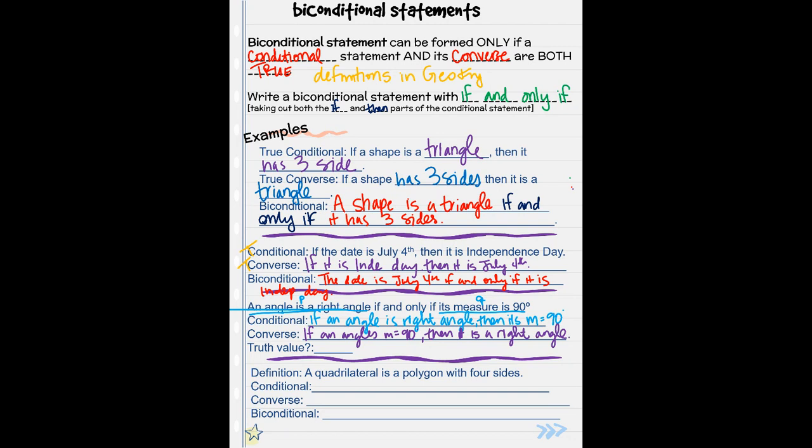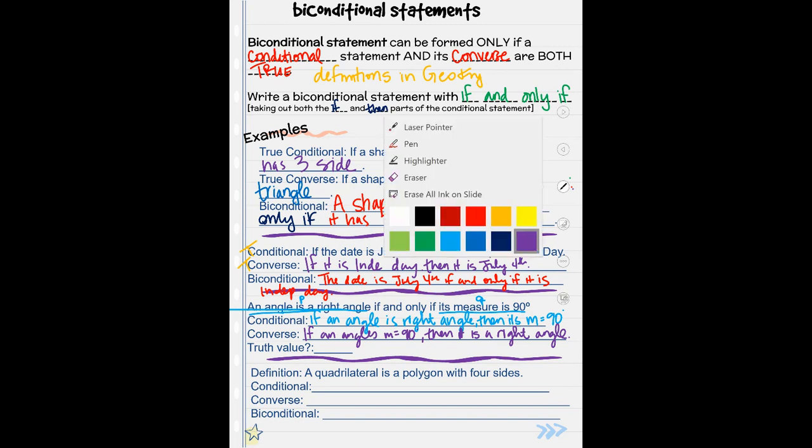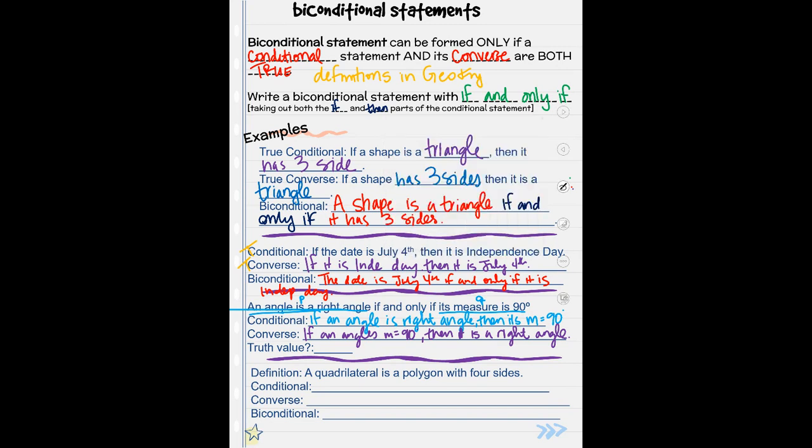Are these both true, which makes our biconditional statement true? If an angle is 90 degrees, is that true in math? Yes. If an angle is 90 degrees then it's a right angle. Yes. These are true. That makes our biconditional statement factual and a definition in geometry.